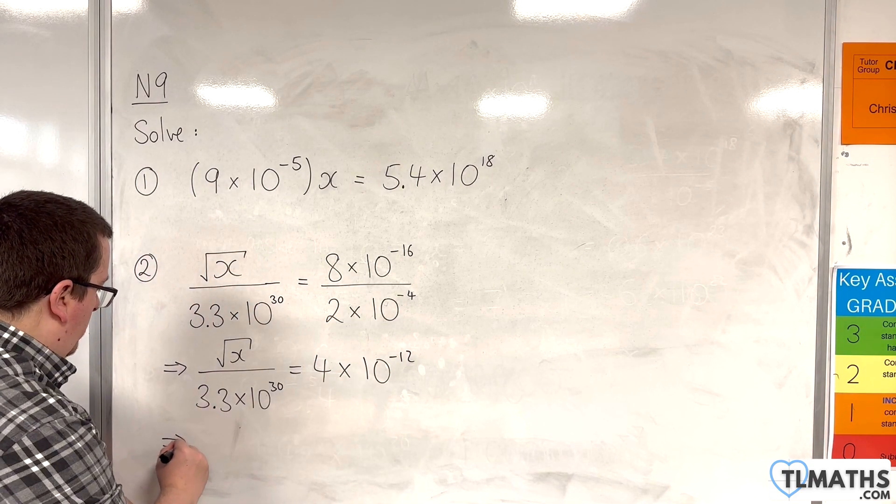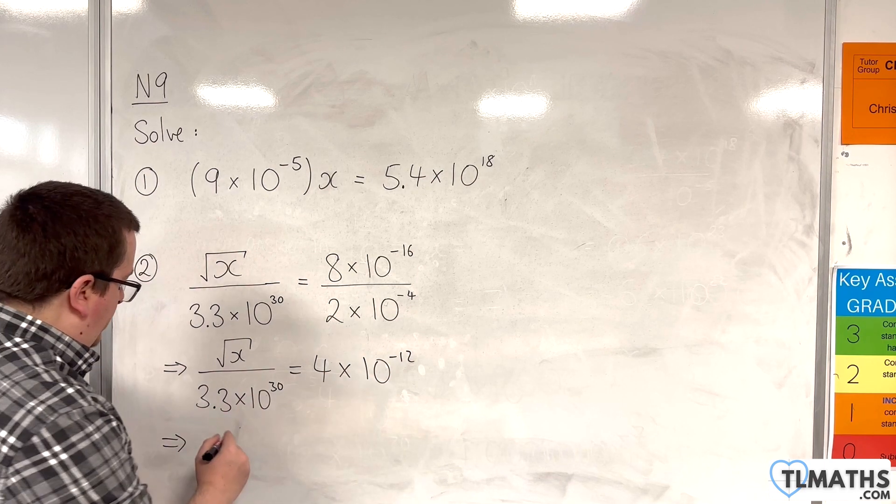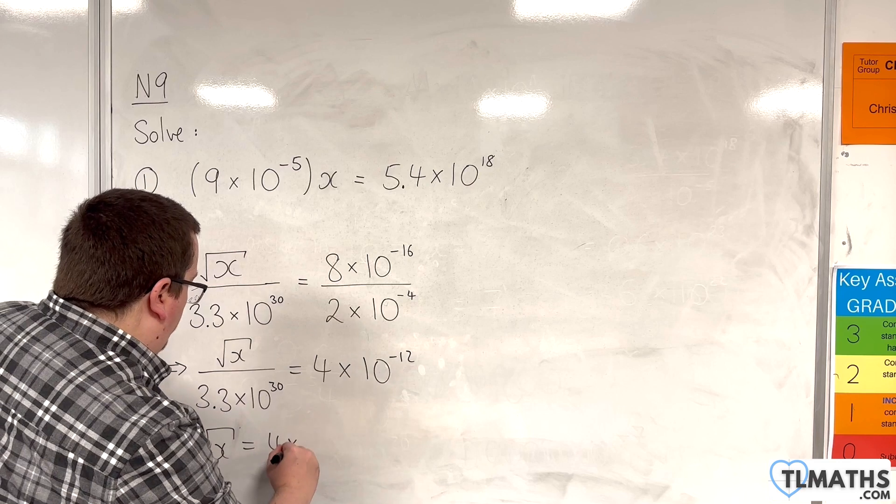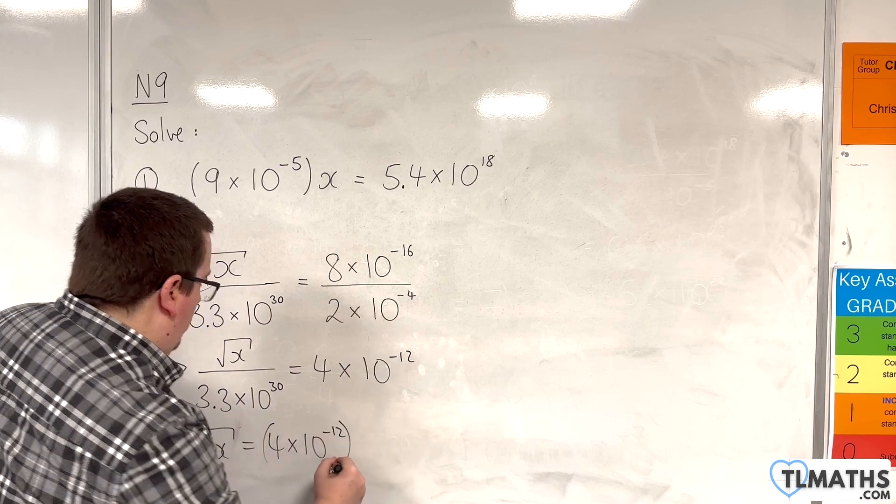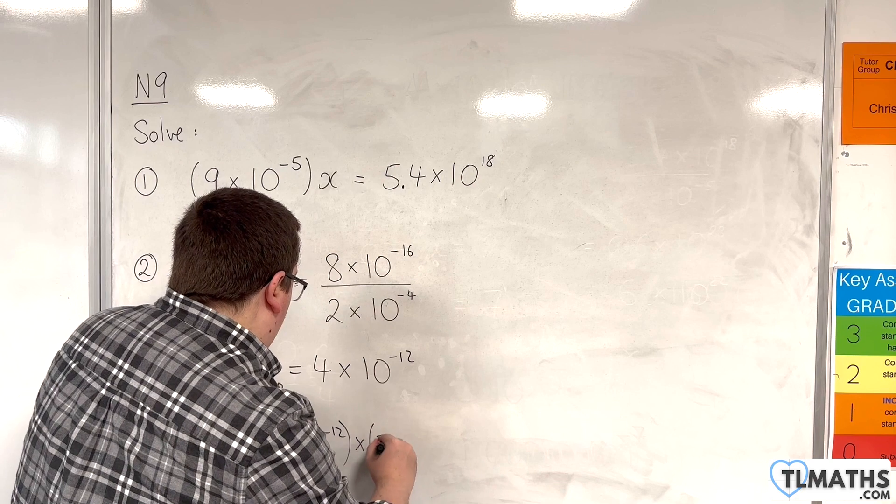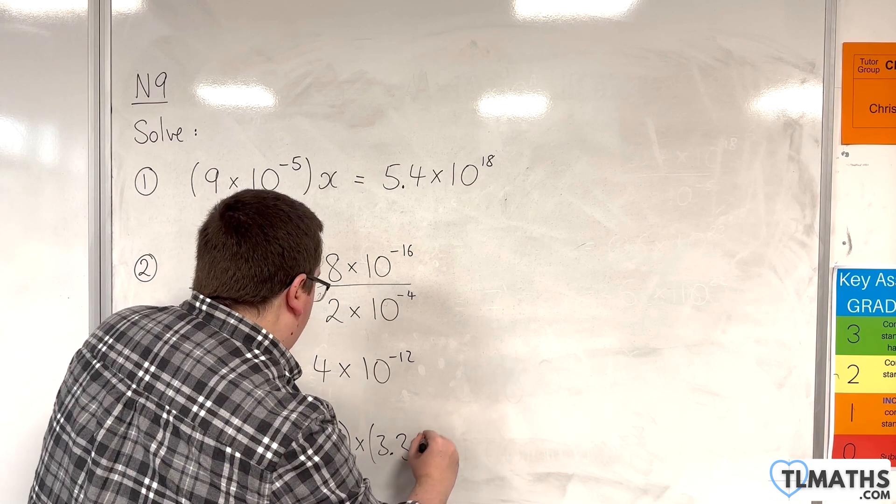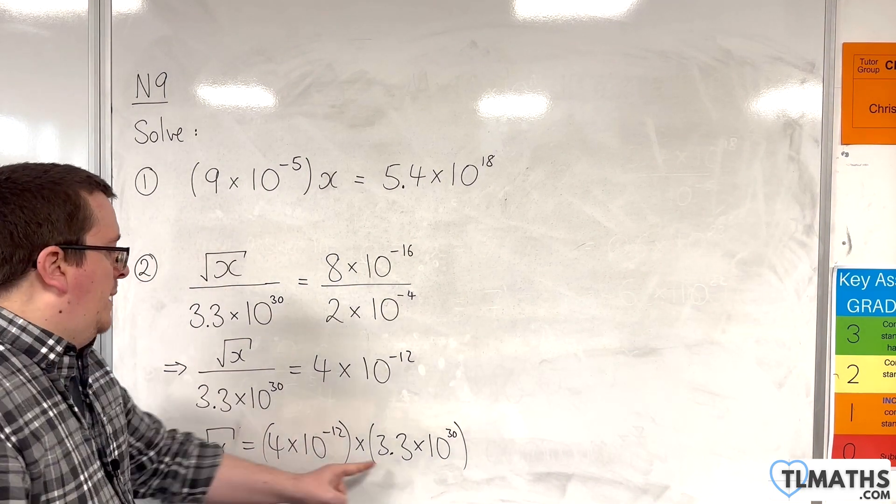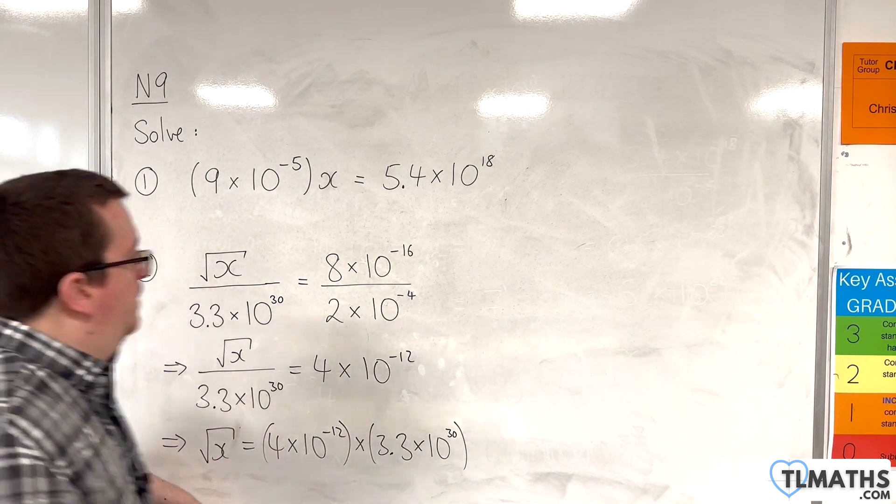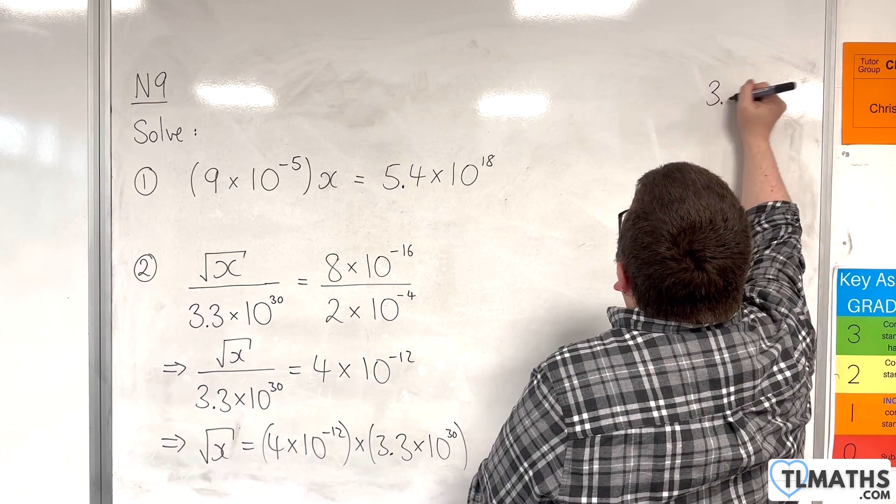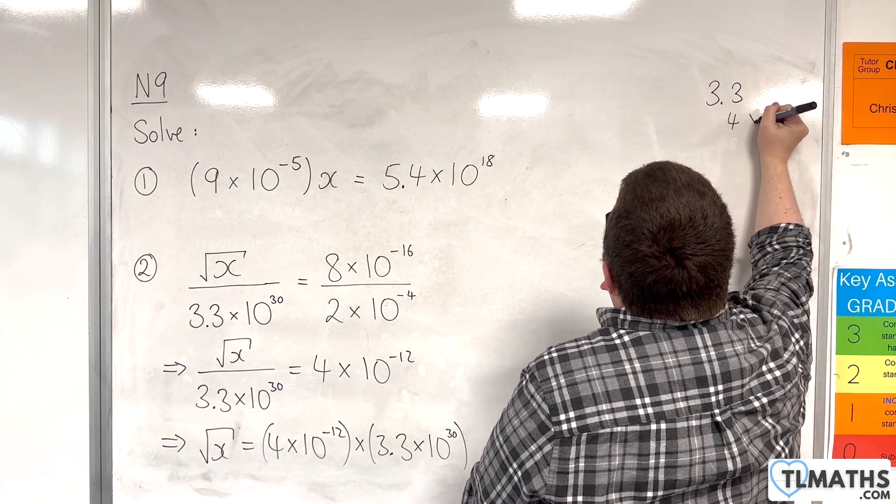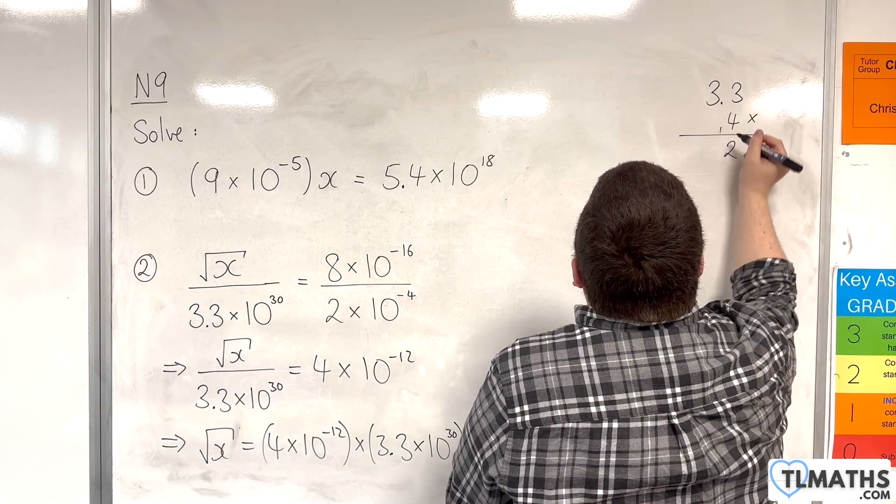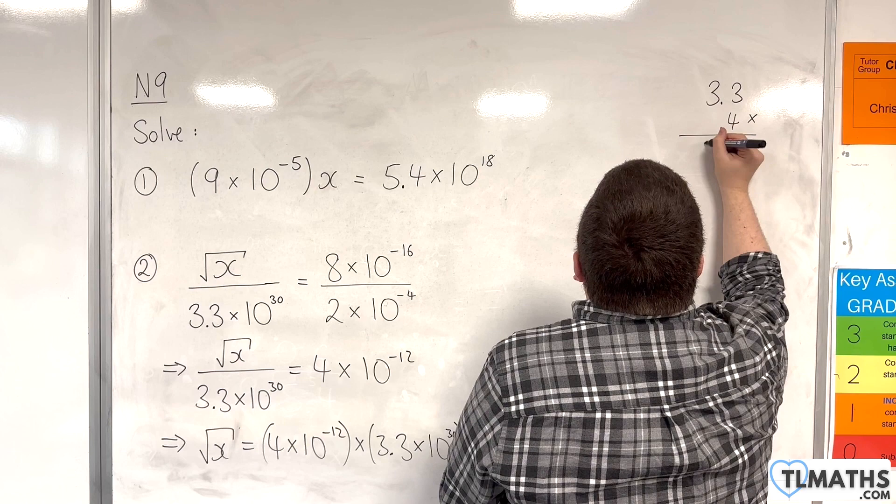I now multiply both sides by 3.3 times 10 to the 30. So, root x is 4 times 10 to the minus 12 times by 3.3 times 10 to the 30. So, I need to work out what 4 times 3.3 is. So, 3.3 times by 4. 4 threes are 12, 4 threes are 12. Add on the 1 is 13.